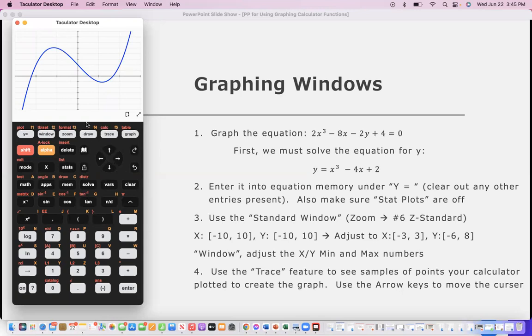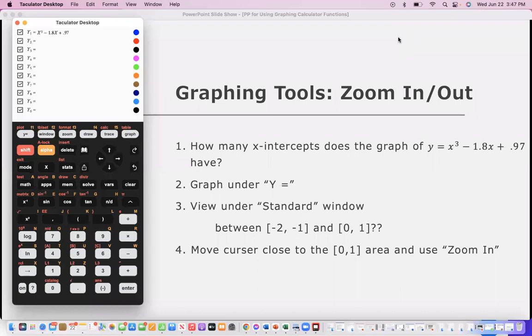Another feature you have is the trace feature. If you hit trace, you'll notice a little icon, a little cursor, appear on your graph. And if you use the arrows, you can trace along the graph here. And the ordered pairs that your computer is using for the graph appear below the graph.